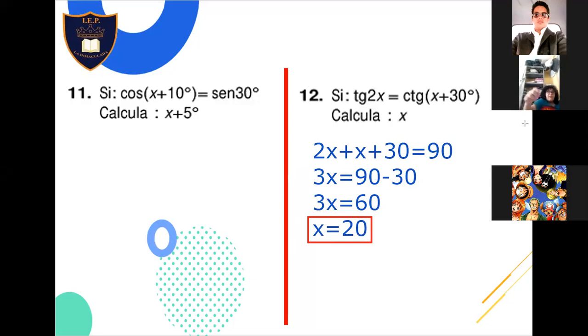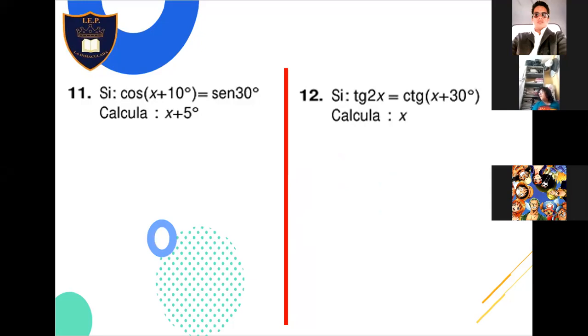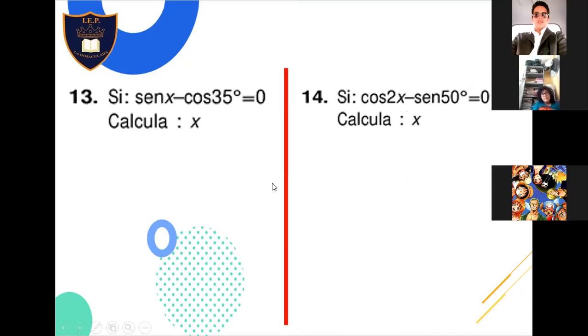Entró franquito. Muy bien. Tenemos ahí el problema 12, ya listo. El zoom está lindo hoy día, está hermoso el zoom. Hoy día sí estoy tranquilo con mis nervios. Número 13: Seno de X menos coseno de 35 igual 0. A ver, voluntarios. ¿Quién me dice el número 13?